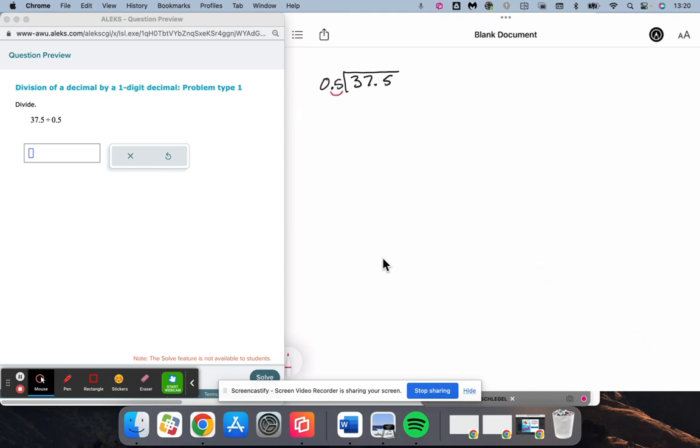In this case we need to move it one space to turn that into a five. So since we move it one space on the outside, we move it one space on the inside as well. Five goes into 37 seven times, giving us 35. 37 minus 35 is 2. Bring down the 5.